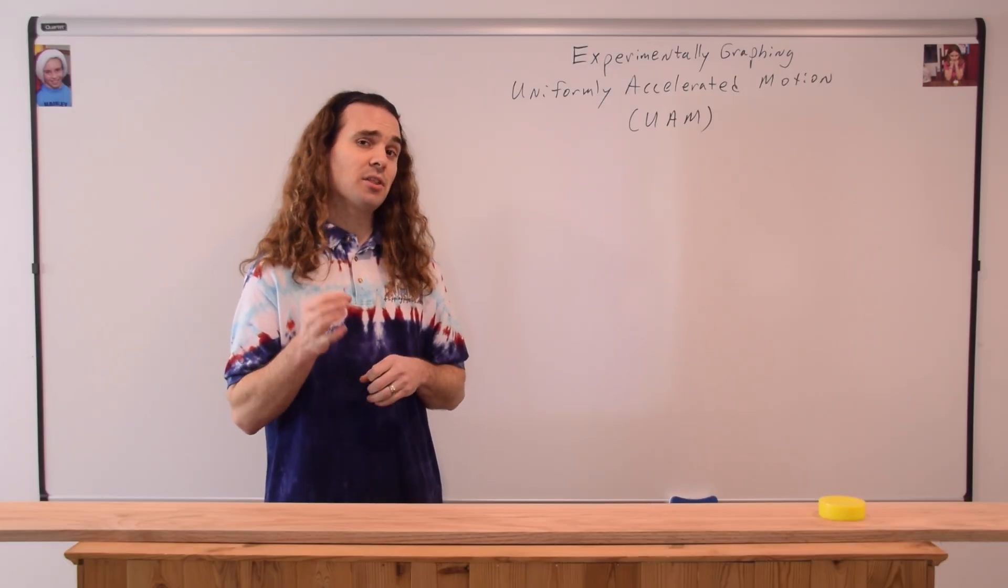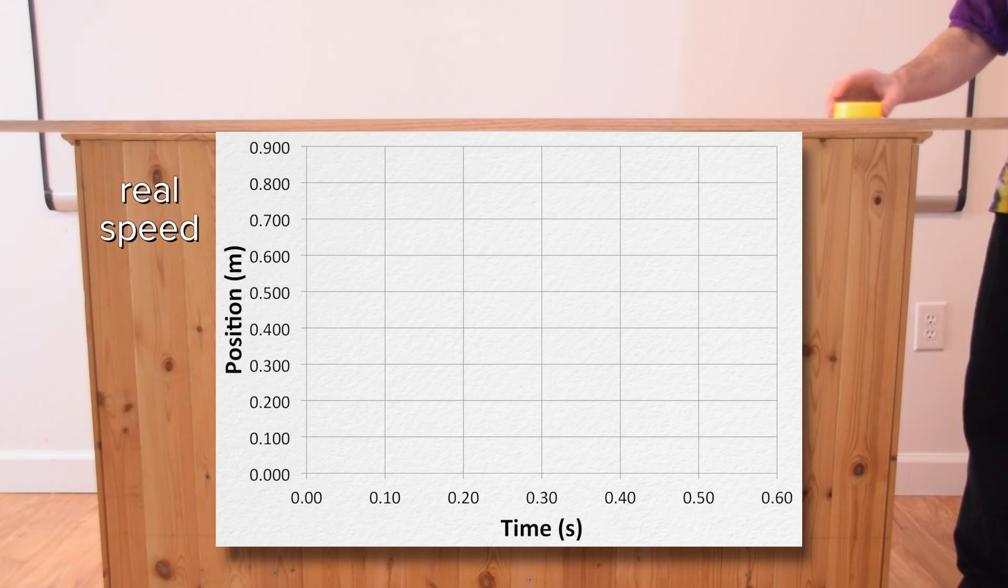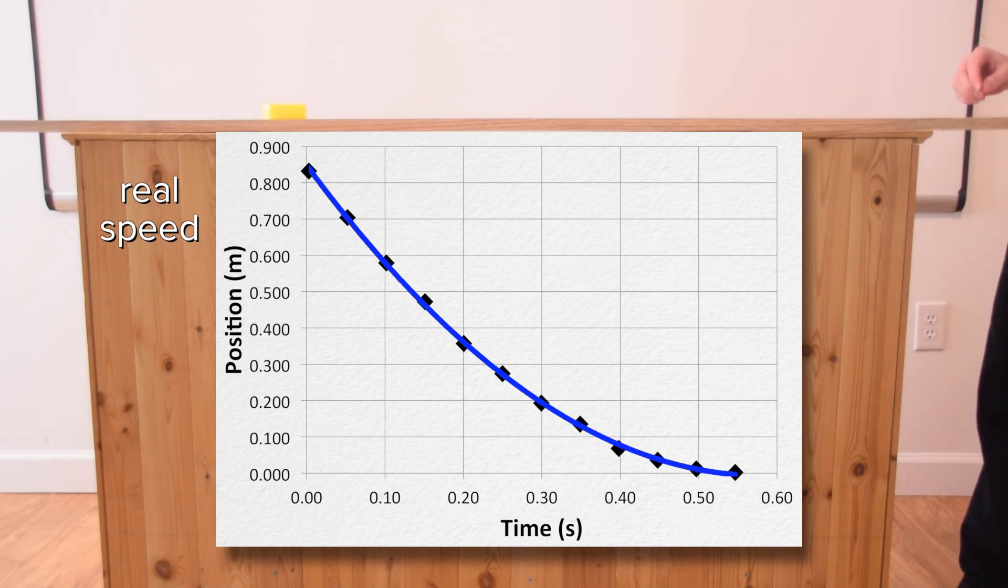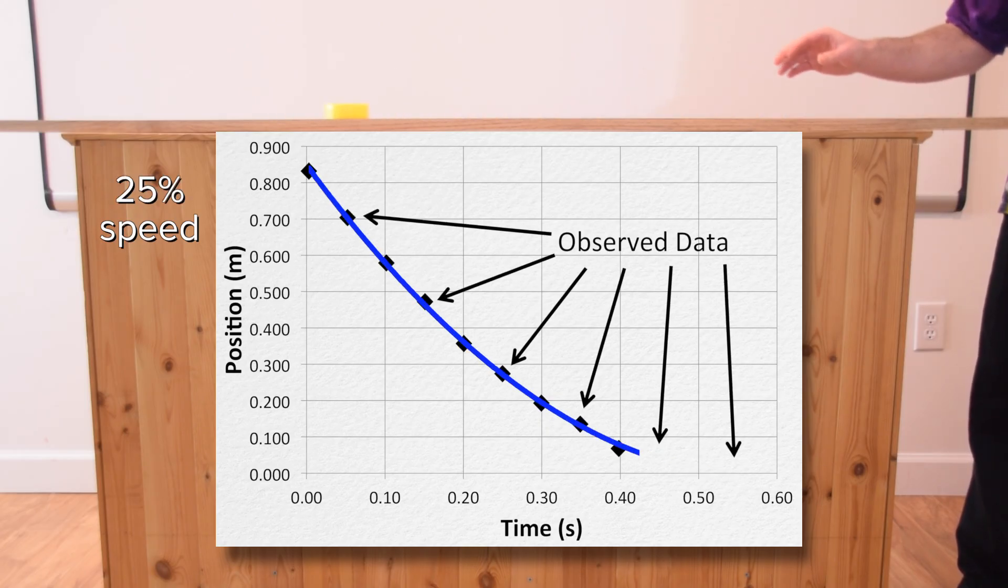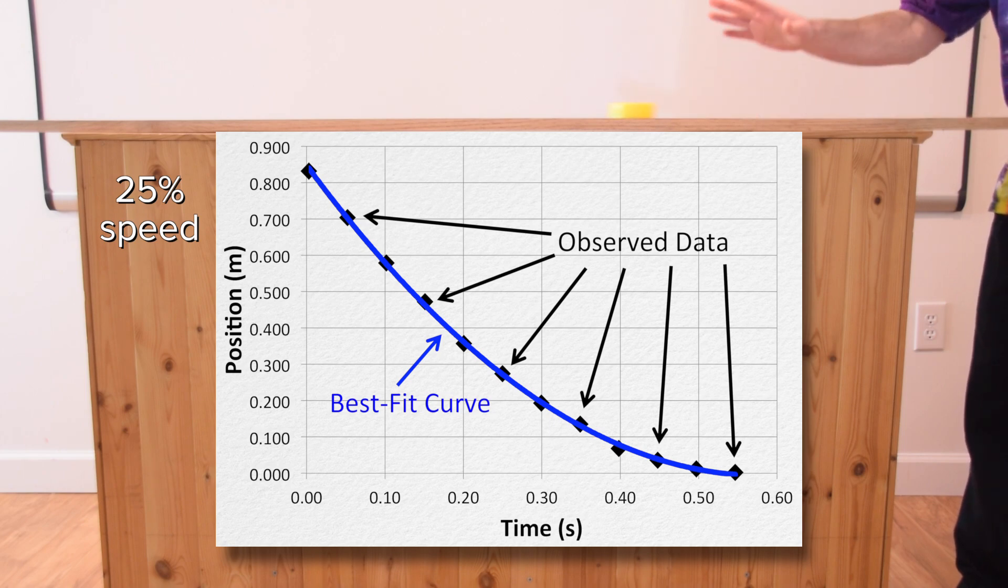Let's start with a graph of position as a function of time. To be clear, the black squares are the experimentally observed data and the blue curve is a best fit curve that best approximates and interpolates the data. Again, black squares are observed data, blue curve is a best fit curve.